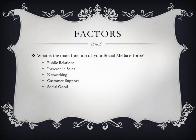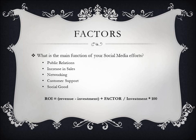So how do these factors fit into the ROI formula? Well, it's pretty simple. You take relatively the same formula and just tweak it a bit. It looks like this: ROI equals the same sum of the revenue minus investment, plus the factor of your choosing, divided by the investment multiplied by 100. You multiply by 100 in order to express the fraction as a percentage — and voila!